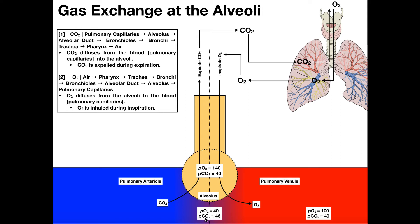Now let's look at the same thing for carbon dioxide. The PCO2, or partial pressure of carbon dioxide, inside the alveolus is about 40. In the pulmonary capillaries, the PCO2 is 46. The discrepancy is not as pronounced with CO2, but we notice that the PCO2 is higher in the blood — in the pulmonary capillaries. So CO2 is going to effuse from the pulmonary capillaries into the alveolus. Based on basic physiology, you probably could have guessed the movement: oxygen moves from the alveolus to the blood, and CO2 moves from the blood to the alveolus.